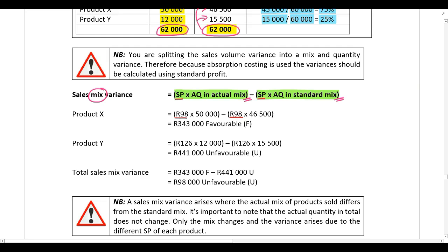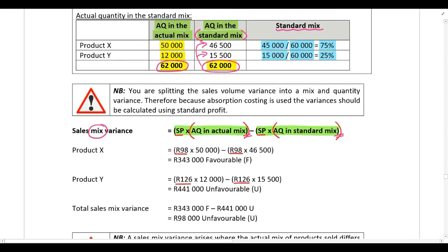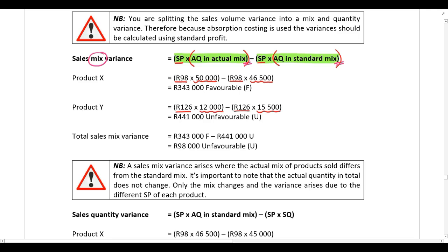Comparing the actual quantity in the actual mix to the actual quantity in the standard mix: for Product X, they should have sold 46,500 units but actually sold 50,000 units — favorable. For Product Y, they should have sold 15,500 units but actually sold 12,000 units — unfavorable.